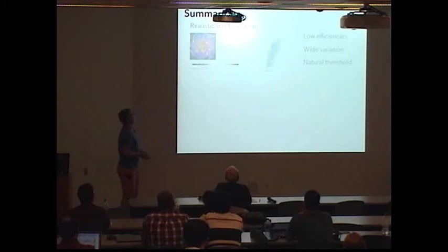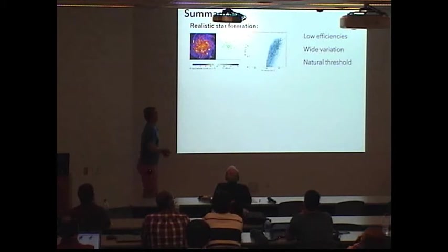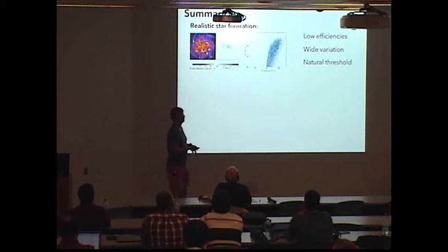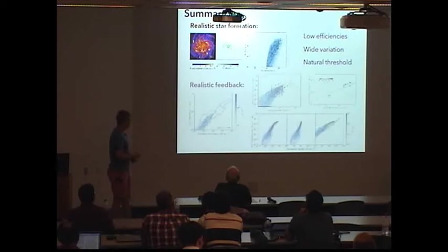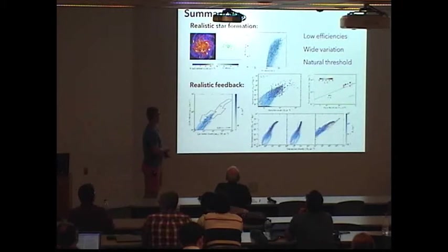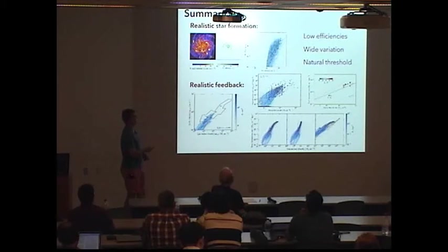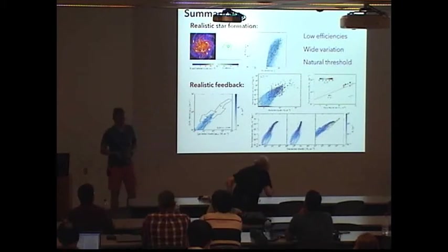As a summary, the turbulent implementation for star formation predicts general low efficiencies. So the efficiencies obtained into most of the gas mass forms stars at efficiency less than 1%. And it also predicts wide variation and a natural cutoff density at which gas becomes cold. And then if we also include realistic description for feedback, we can simultaneously recover many observable properties such as turbulent velocities on small scales, and star formation rates on the wide range of scales from local GMCs, kiloparsec scales and even global galactic scales. Thank you.